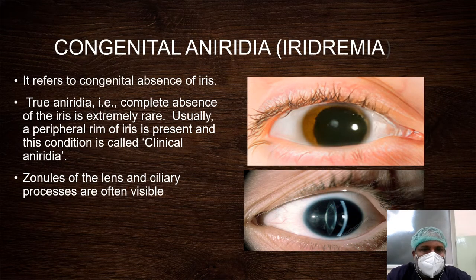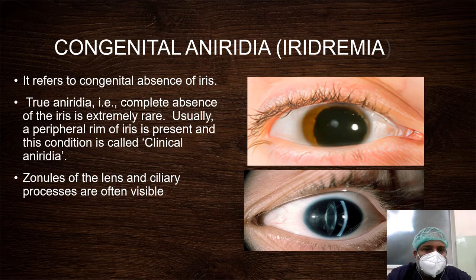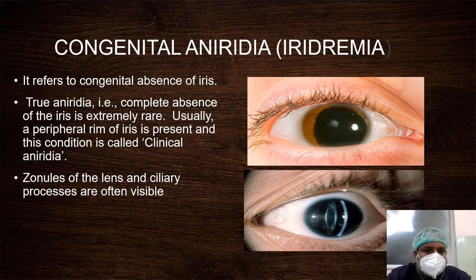The next anomaly is congenital aniridia. It is the total absence of the iris. True aniridia is complete absence of the iris and is extremely rare. Usually a peripheral rim of iris is present, and the condition is called clinical aniridia as shown in the picture. The zonules of the lens and ciliary processes are often visible clearly.